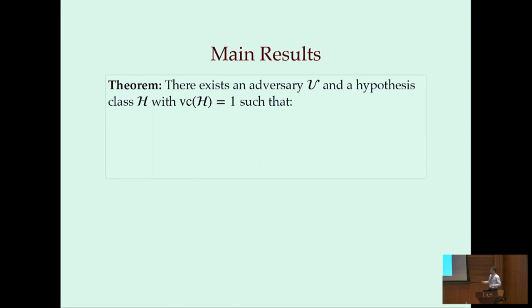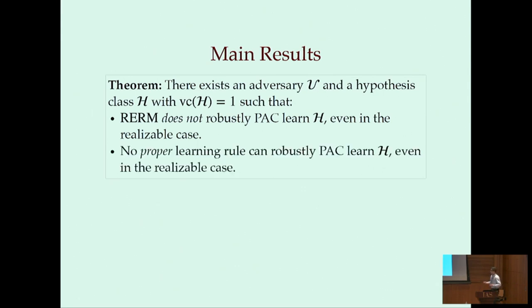So our first main result, we show that there is a very simple hypothesis class H with VC dimension one, where we don't have uniform convergence of the robust risk, no matter how large of a sample that we draw from the distribution. More strongly, we show that robust ERM can't robustly PAC-learn this class H, even in the realizable case, where we know that there is a predictor in the class that is perfectly robust. We even show that no proper learning rule can robustly PAC-learn this class of functions H. And by proper learning rules, we mean any learning rule that is constrained to outputting predictors in the class. So you can think of this as any learning rule of the form that minimizes some empirical functional on the data by picking some predictor in the class H.